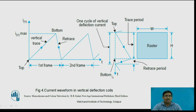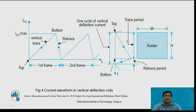This previous diagram is explained with the vertical current versus time graph showing the vertical deflection current. It starts from zero, reaches maximum current, then drops back to zero. From zero to maximum current is the vertical trace, and from maximum back to zero is the retrace path. This repeats for each frame — up to 625 frames shown here. The trace period equals the height of the raster. This represents the current waveforms in the vertical deflection coils.